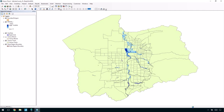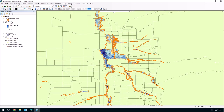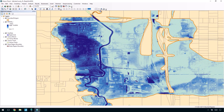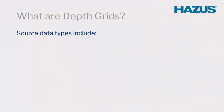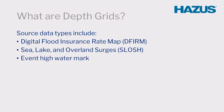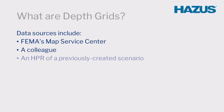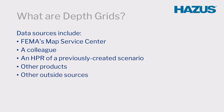A depth grid is a raster GIS dataset that depicts variable flood depths throughout the extent of a flood event, and it greatly increases the accuracy of your analyses because of the specificity of the water depths. Depth grids are generated from a multitude of source data, such as DFIRM, SLOSH, and Event High Watermark data.